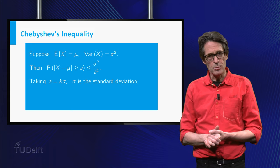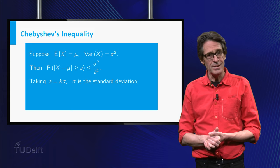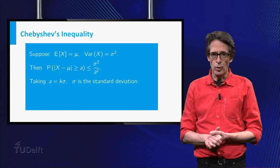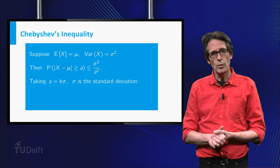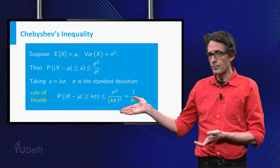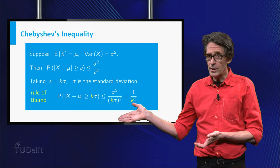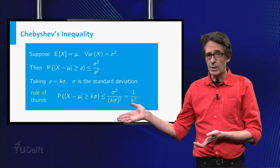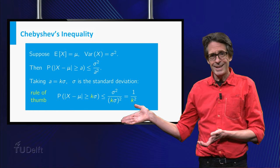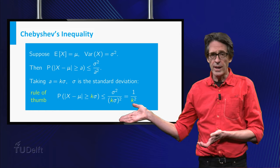When the distance a is expressed in σ, the standard deviation, this gives the following often used rule of thumb. The probability of an outcome more than k sigma from the expectation is less than or equal to 1 over k².